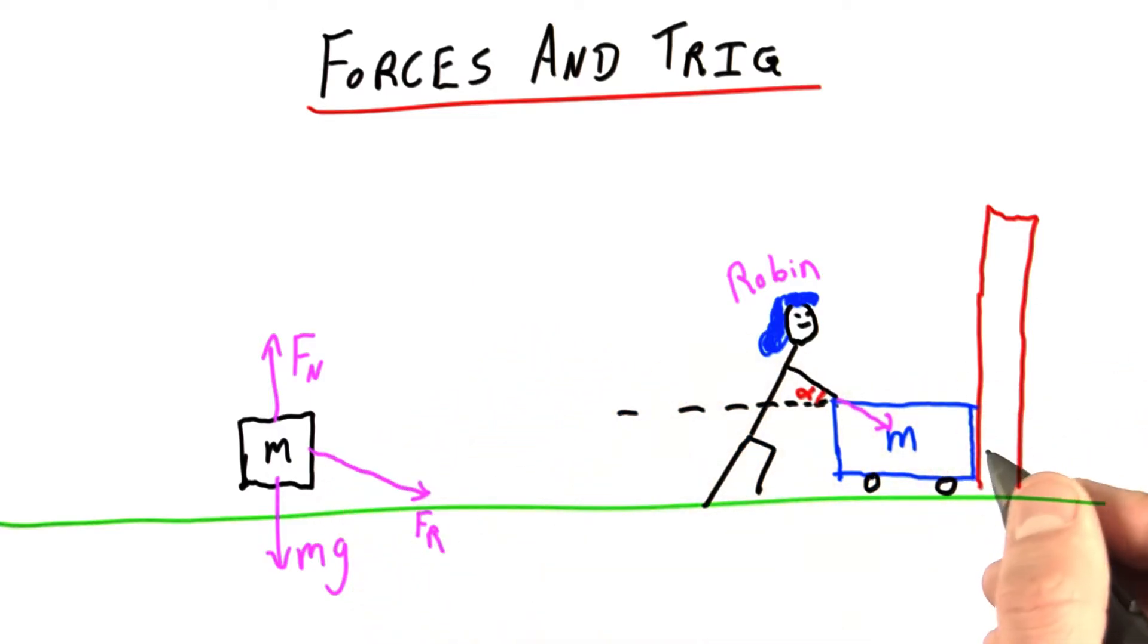And we can't forget that the wall is pushing to the left. Of course, if the wall weren't there, the cart would be free to roll. But since it is, and it's stopping the motion, the wall itself must be providing a force. Let's call it fw for wall.